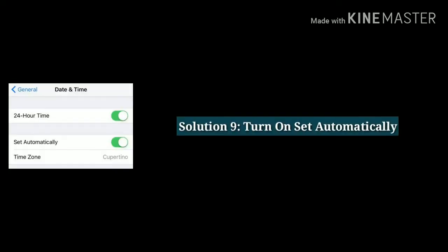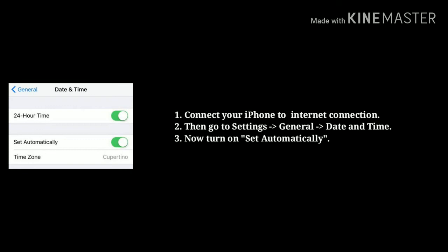Solution 9: Turn on Set Automatically. Connect your iPhone to an internet connection. Then go to Settings, then tap on General, next tap on Date and Time. Now turn on Set Automatically.